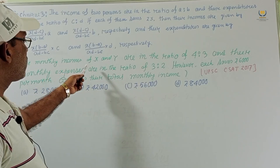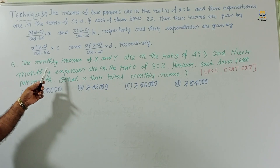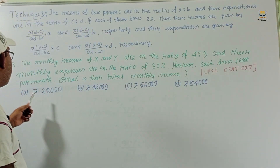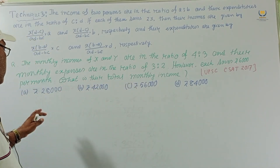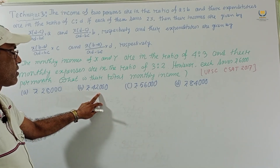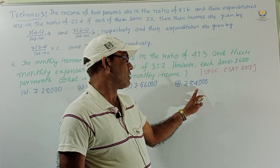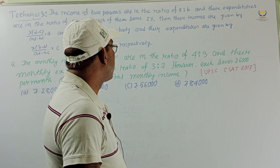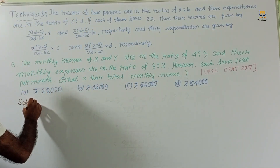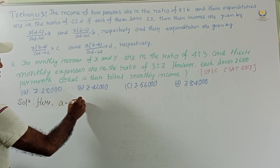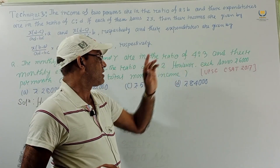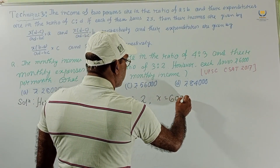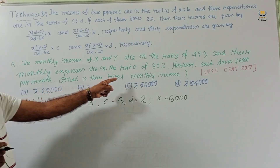Consider another problem from UPSC C-SAT 2017: The monthly incomes of X and Y are in the ratio 4:3 and their monthly expenses are in the ratio 3:2. However, each saves rupees 6000 per month. What is their total monthly income? Options: 28,000; 42,000; 56,000; or 84,000. Given: a = 4, b = 3, c = 3, d = 2, x = 6000.